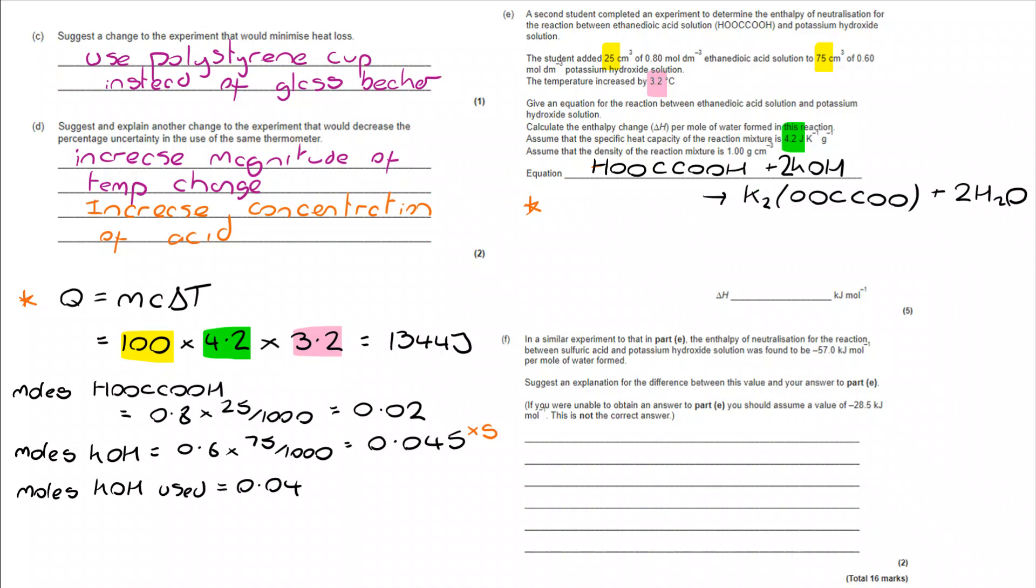So now let's take that calculation forward. My delta H, I'm converting my joules to kilojoules by dividing by 1,000. And then kilojoules divided by moles, 0.04, takes me to the answer 33.6. But remember, the temperature has gone up. That makes it exothermic. And that means it's absolutely essential we have the negative sign there as well.